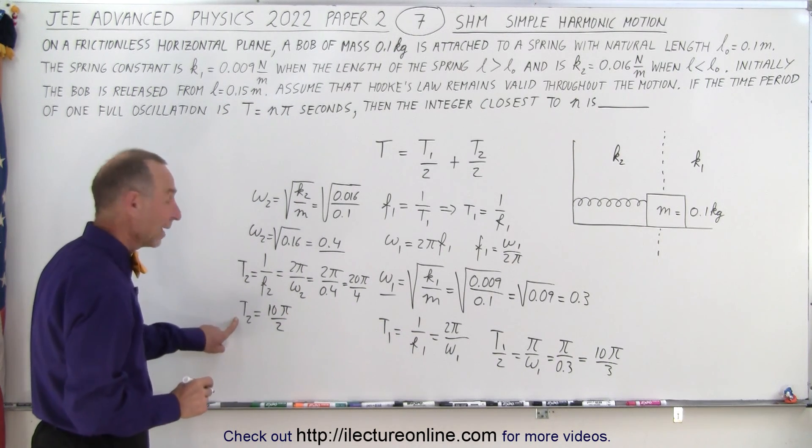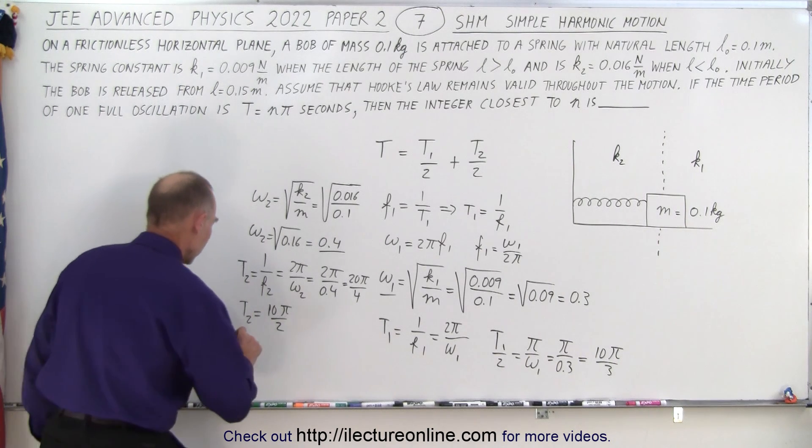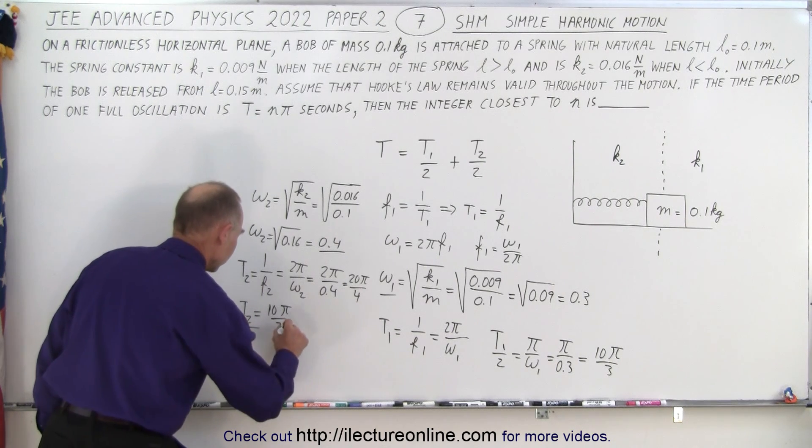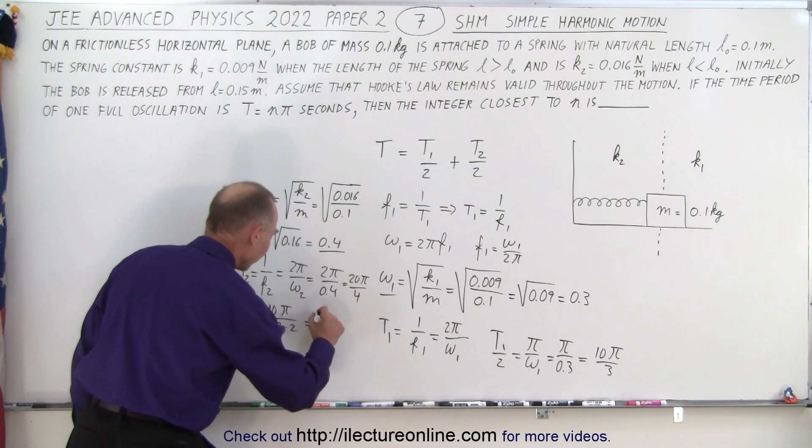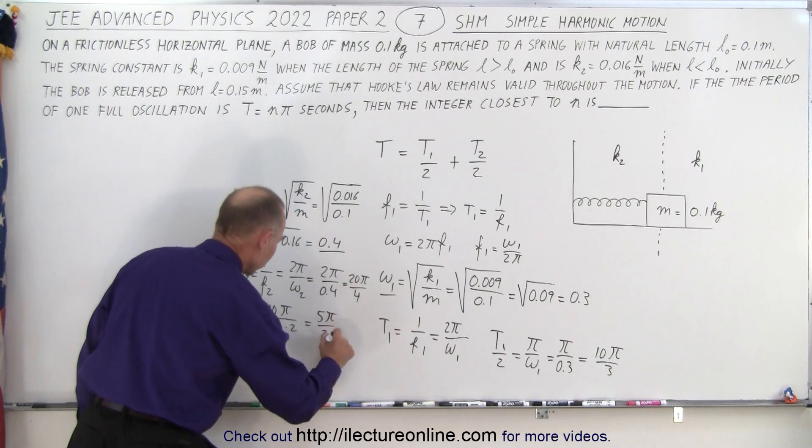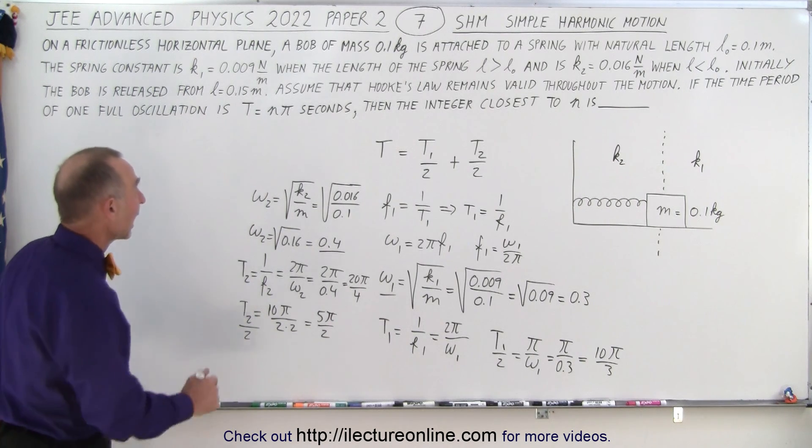But of course we want half of that. So we divide by 2. So we have 10 pi over 4 or 5 pi over 2 when we divide both sides by 2. All right so now we need to add the two together.